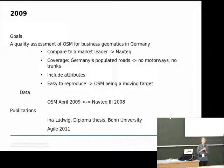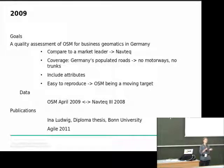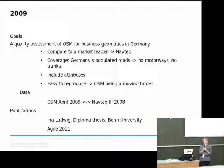The solution we had was to compare OpenStreetMap to a market leader, in this case Navtec. As it was done in the course of a diploma thesis by Ina Ludwig, we wanted to reduce the complexity, so we excluded motorways — motorways are not populated and so there are no household potential data at these roads. We included attributes, and we wanted the whole approach to be easy to reproduce, which we did just a few months ago.